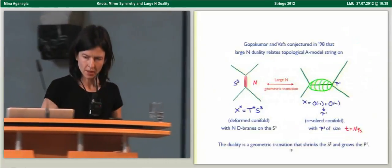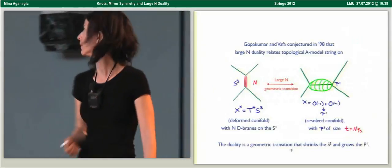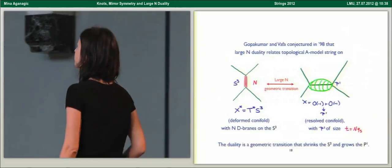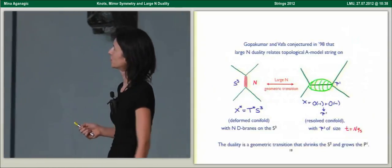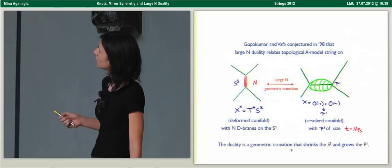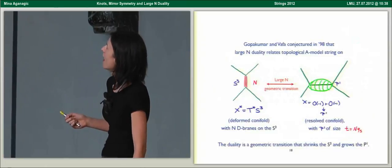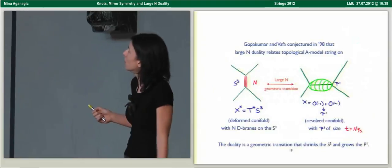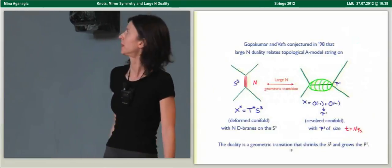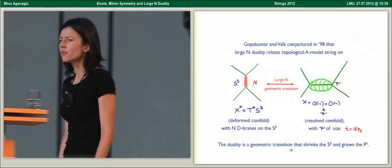The setting that we will need is that of the A model topological string. Gopakumar and Vafa conjectured in 1998 that large N duality relates A model topological string on the deformed conifold with N D-branes on the S3 and the A model topological string on the resolved conifold with a P1 whose size is set by the 't Hooft coupling.